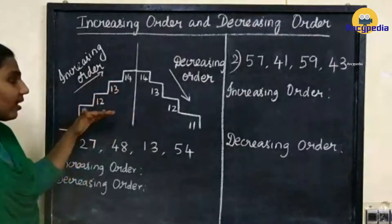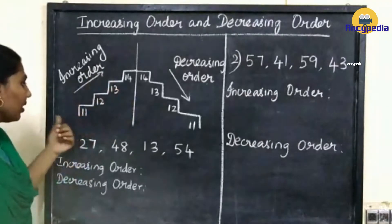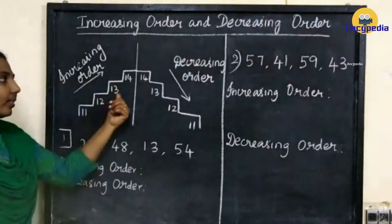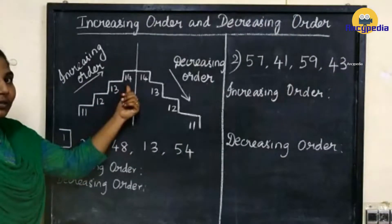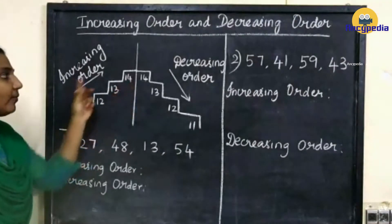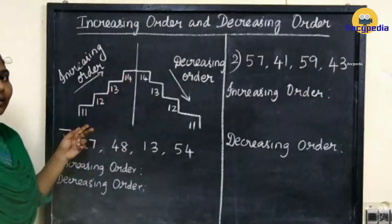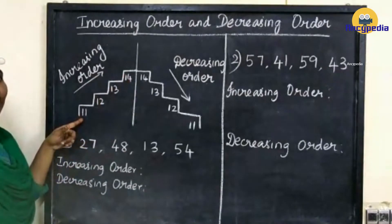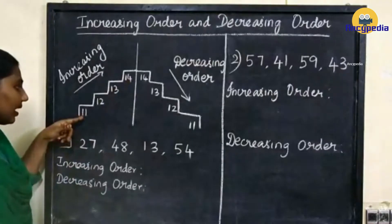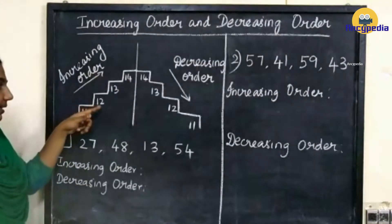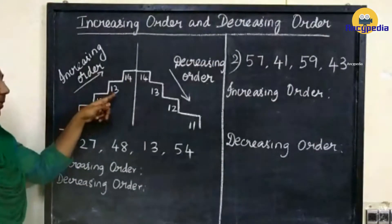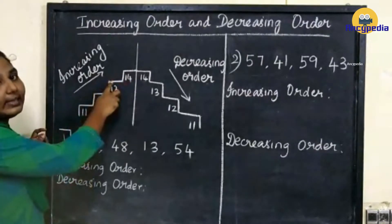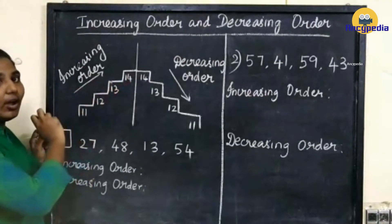Here I have written some numbers: 11, 12, 13 and 14. Which one is smaller? 11 is smaller, right? So first we have to write 11, then 12, 13 and 14. So this is increasing order.